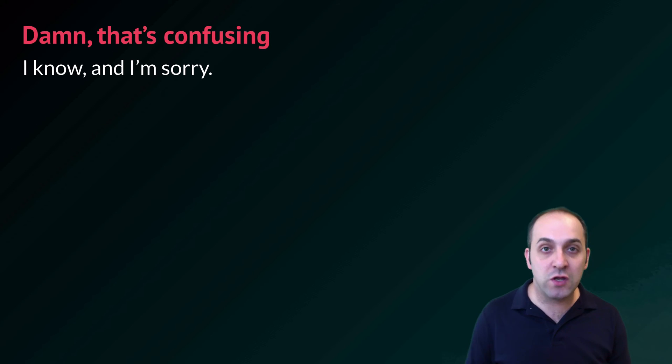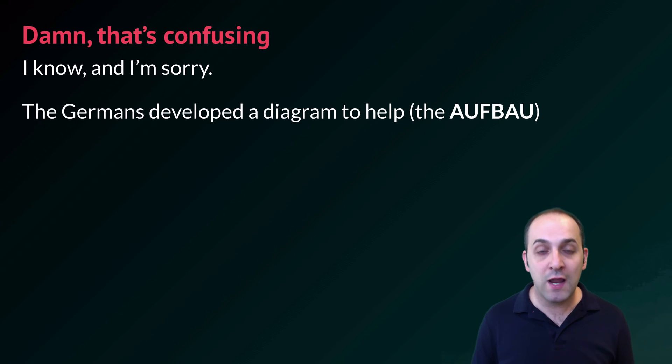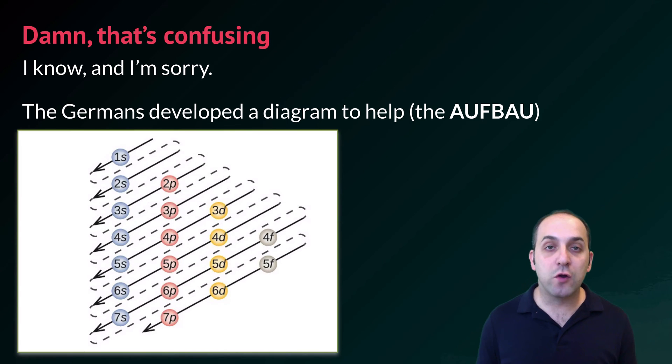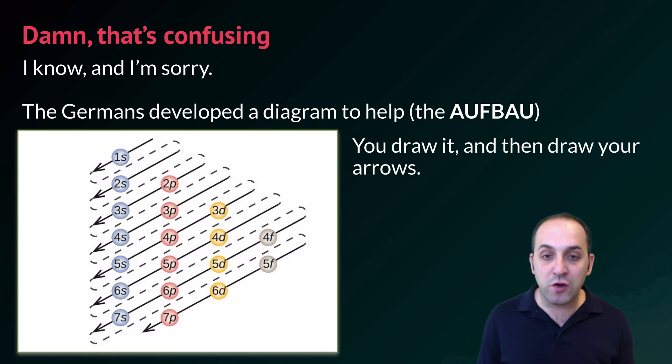At the same time, there is a trick that you can use to help you remember your filling order. It was developed by the Germans who came up with it. It's called the Aufbau. And what you do is you draw a diagram like this. So you're going to line up all of your sublevels in the same column. So you can see 1s, 2s, 3s, and 2p, 3p, 4p, and so on. And then what you're going to do is you're going to draw arrows through it in sequence, which tell you the filling order.